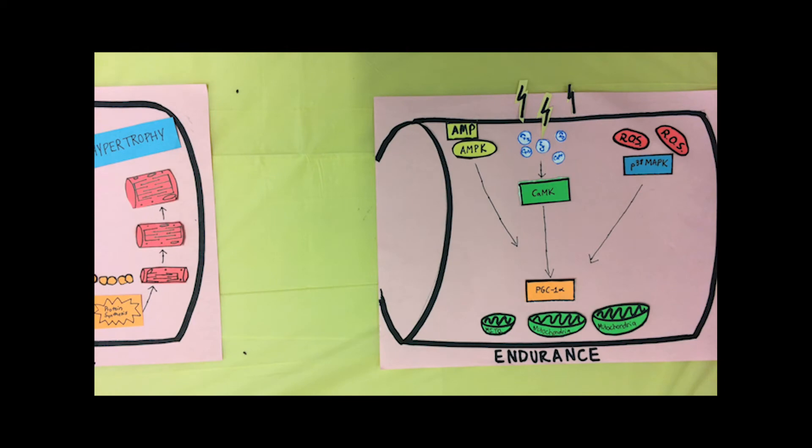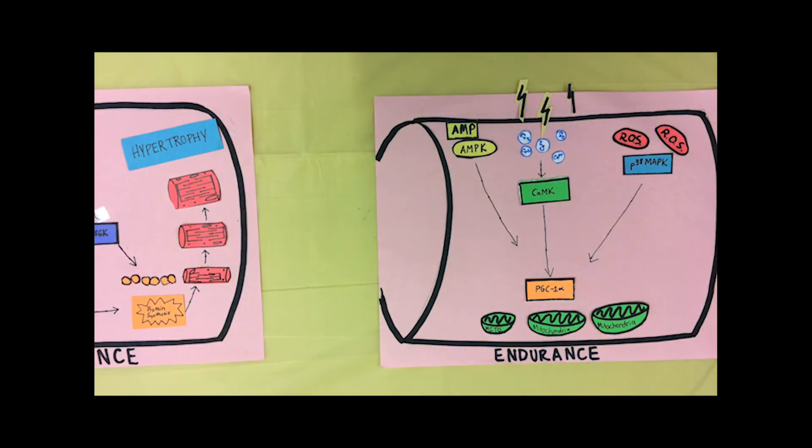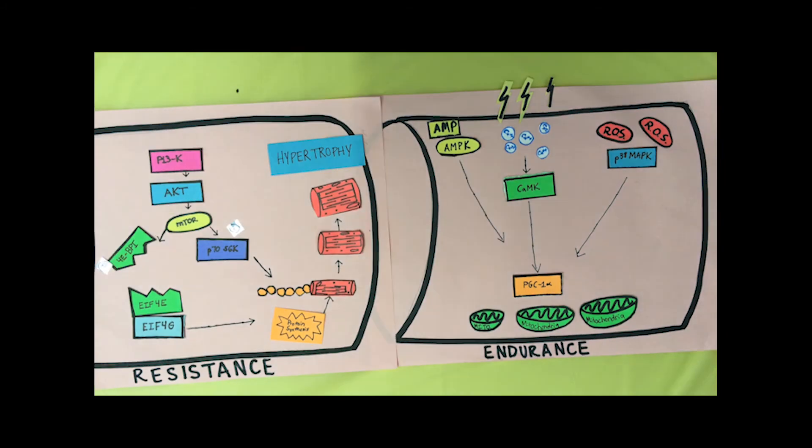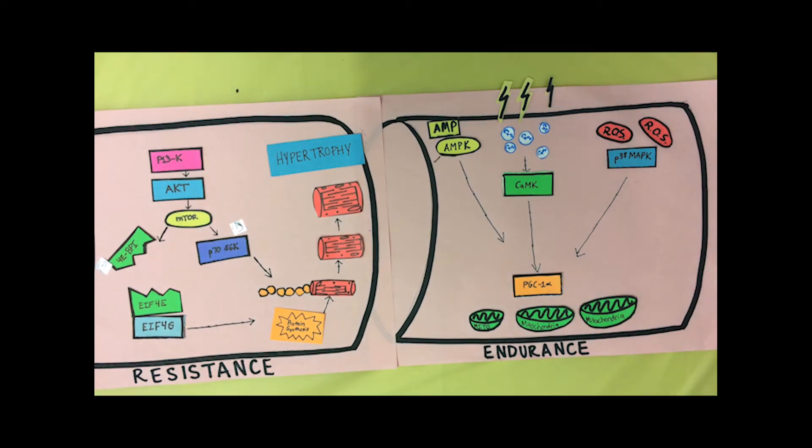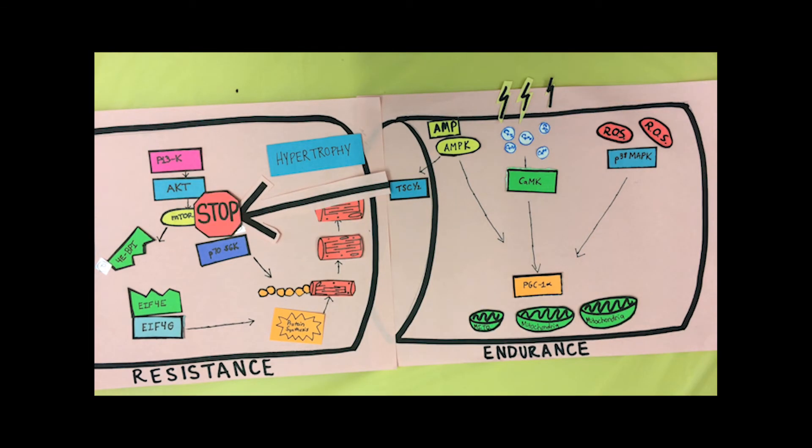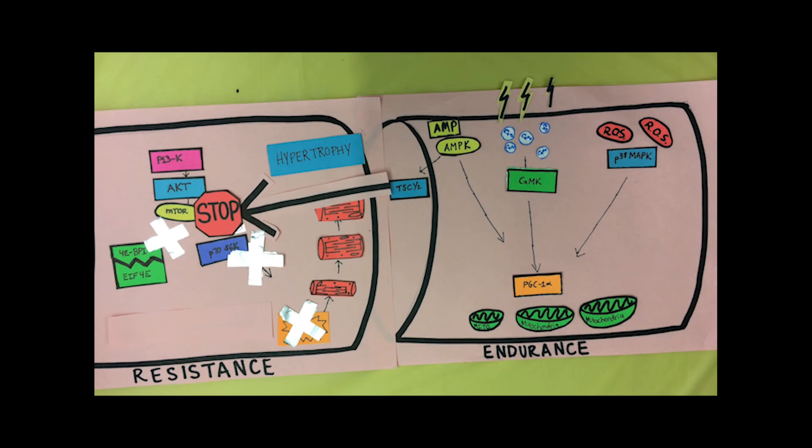While these adaptations thus far seem separate, there is a known interference effect. This is brought about by the activation of AMPK, which phosphorylates the tuberous sclerosis protein 1 and 2 complex, otherwise known as TSC1 or TSC2. The TSC complex inhibits the mTOR complex, reducing its downstream effect on protein synthesis and muscle hypertrophy.